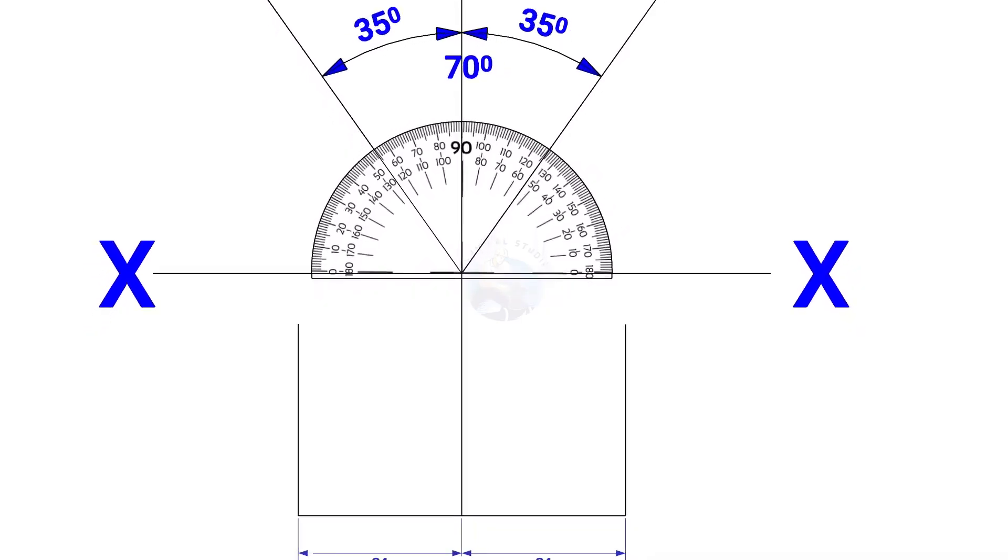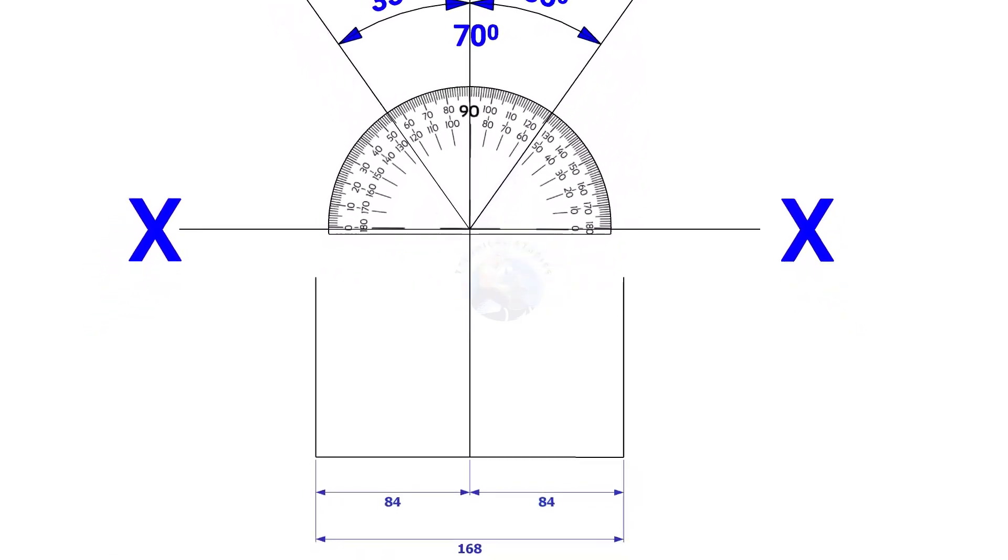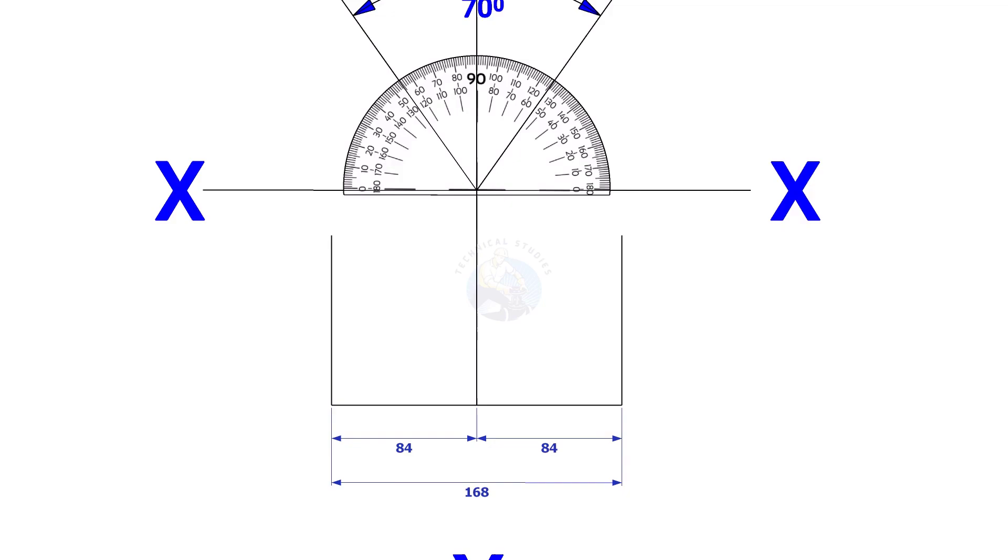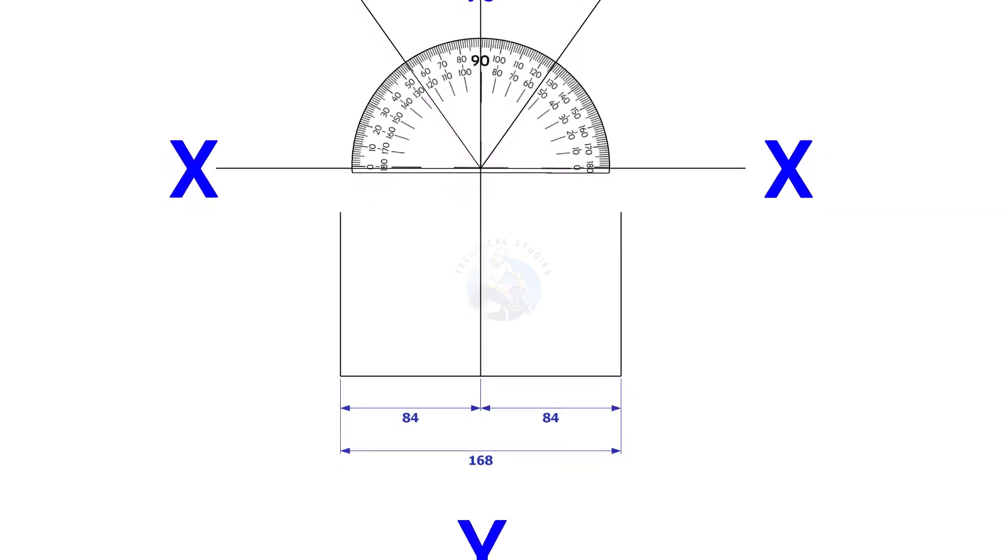Mark 84 millimeters each on both sides of the YY axis, that is the outside diameter of the header. Draw perpendicular lines on these marks, as shown.